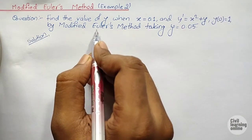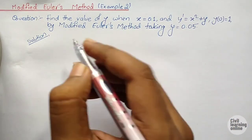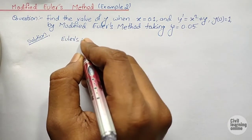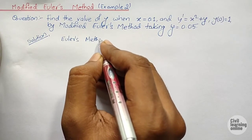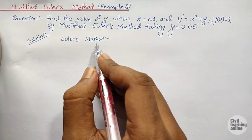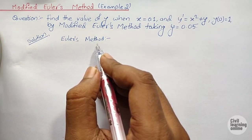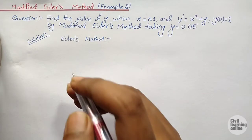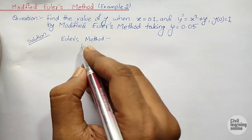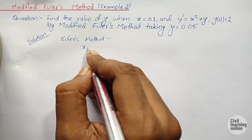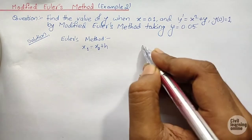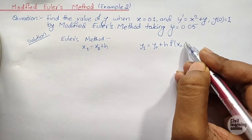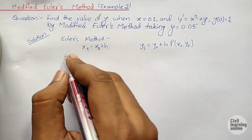In Modified Euler's Method we will need the formula for Euler's Method also. So let us first write down the formula for Euler's Method. You do not need to mention this formula while solving in an exam — you can simply start from the solution. The formula for Euler's Method is: x₁ equals x₀ plus h, and y₁ equals y₀ plus h·f(x₀, y₀).